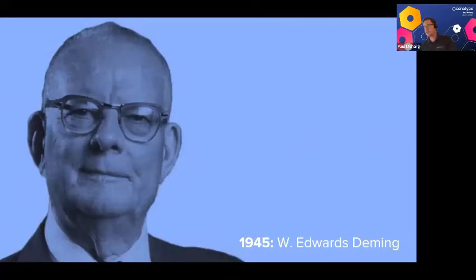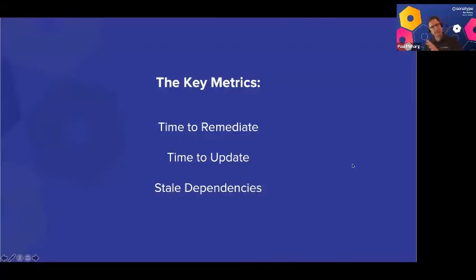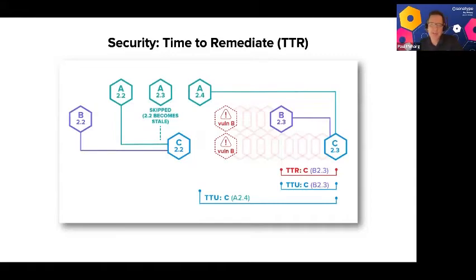Deming also focused on ceasing dependence on mass inspection — you cannot inspect quality into a product, you've got to ensure good inputs from the beginning. Key metrics for quality are mean time to remediate, time to update, and stale dependencies. In a hypothetical application with three dependencies, component C has a direct dependency on both A and B as transitive dependencies.